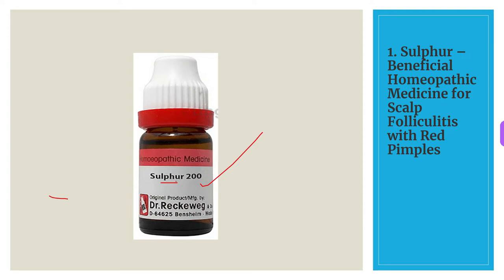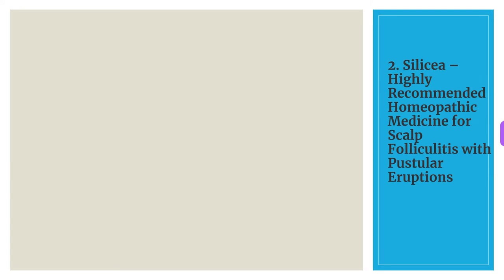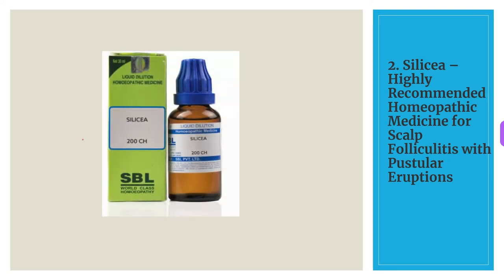The second medicine for scalp folliculitis is Silicea. Silicea is a highly recommended homeopathic medicine for scalp folliculitis with pustular eruptions. It gives great results where pustules develop and is a very good medicine for folliculitis with suppuration. It helps in absorbing pus and promoting quick healing. The eruptions may be itchy and the itch worsens during the day, and the patient may also experience increased sweating.